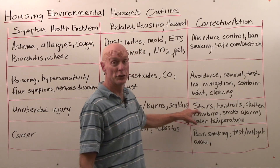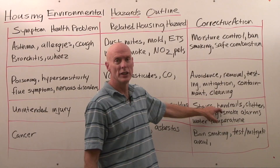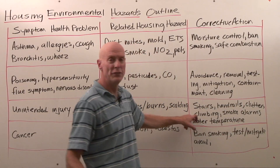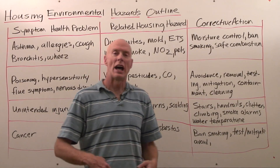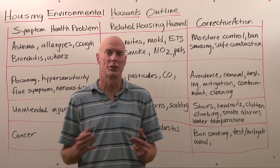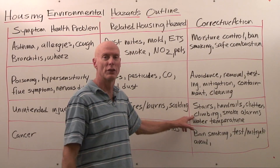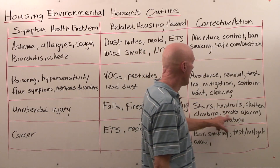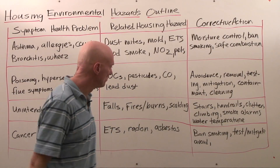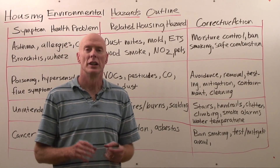For corrective action: make sure stairs are safe and in good repair, handrails are fastened, and every staircase has a handrail. Remove clutter from hallways, walkways, and stairs. Be very careful climbing — if you frequently need to reach high places, get a proper stepladder rather than stepping on a weak chair or stool. Whenever your feet are off the ground, you are in grave danger. For fires, smoke alarms are the single most important thing to prevent death and injury. For scalding, control water temperature — 120 degrees Fahrenheit at the tap closest to the water heater is usually sufficient.